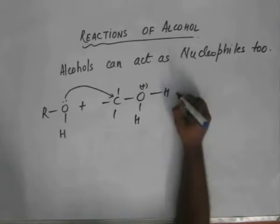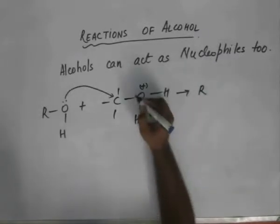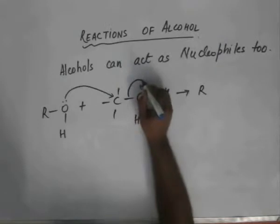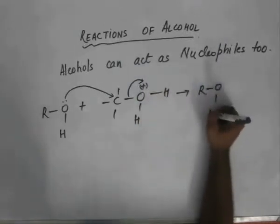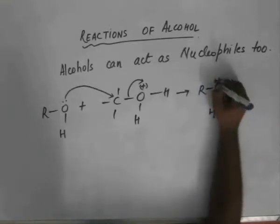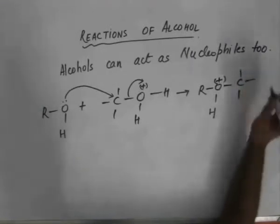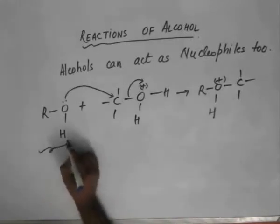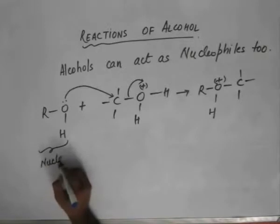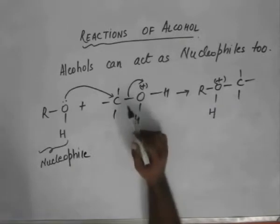We have R. When it attacks, H₂O is removed. So we are left with R, O, H. We have a plus charge on it — on carbon. This is how an alcohol can act as a nucleophile and attack on a nucleophilic center.